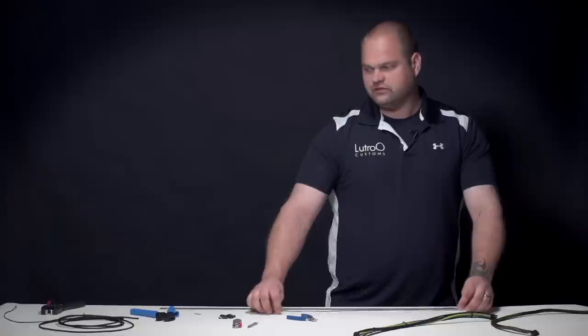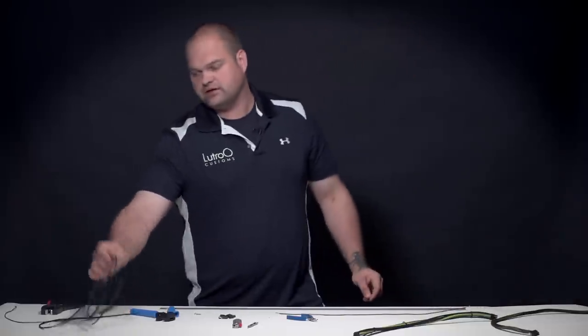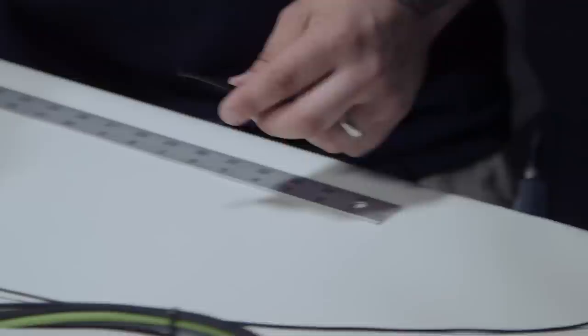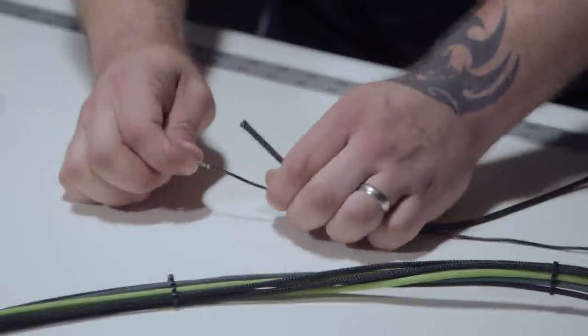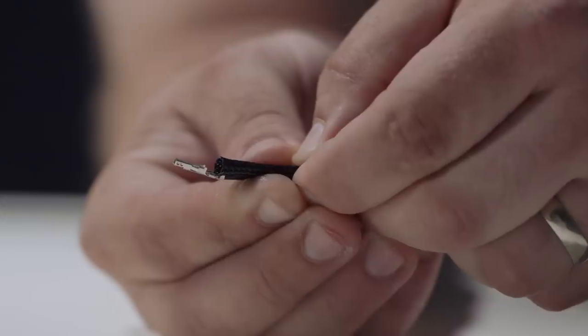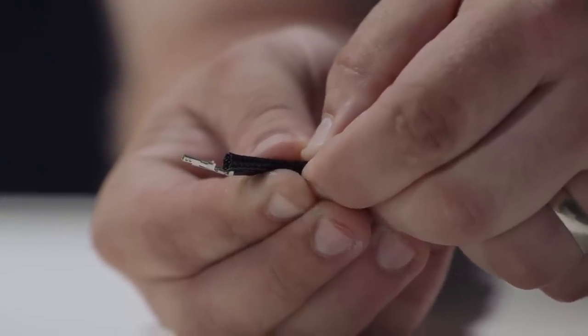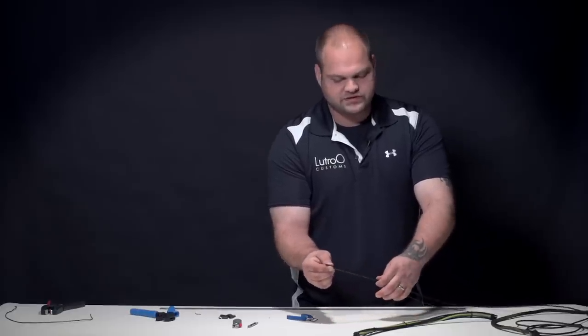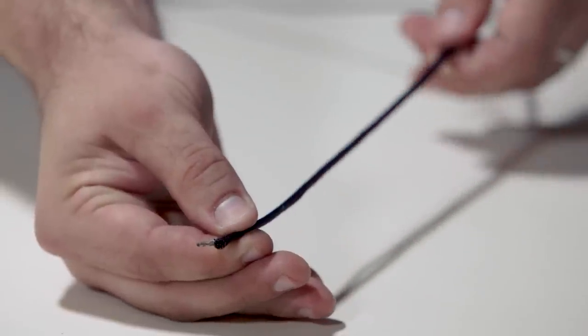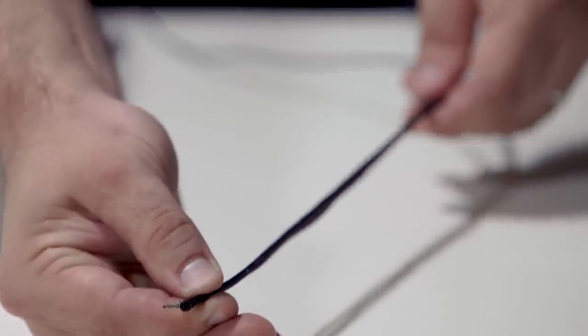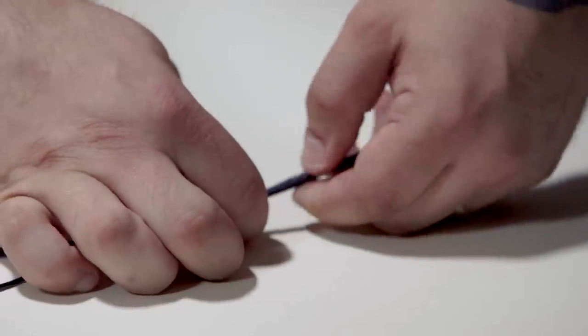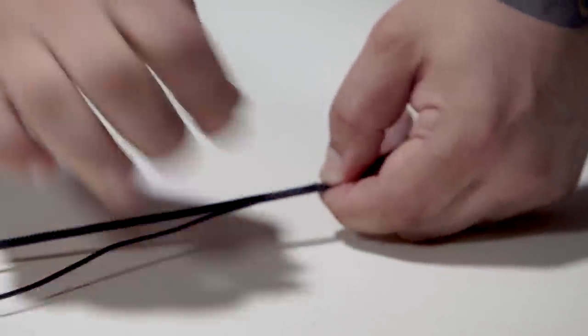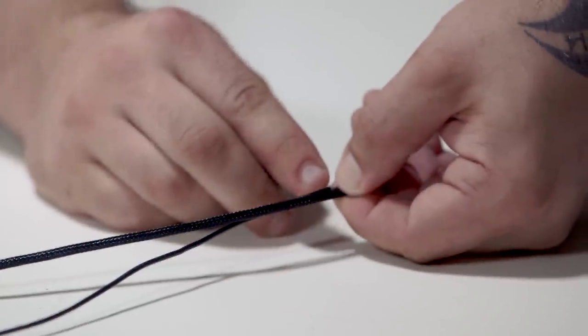The next thing that we want to do is we'll actually take our sleeving now and we'll measure it out. Now, on the sleeve, you'll see again where the crimps are. I will match this right where the second set of the wings meet and then I will hold it without stretching the sleeving. If you stretch the sleeving, when you go to put it on, what it'll do is it'll be too short. Where I measured this is I measured it right up to the bottom of the wings.